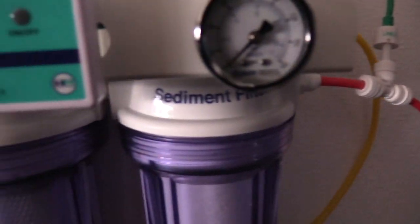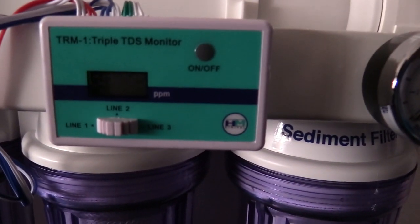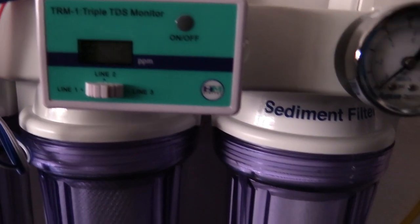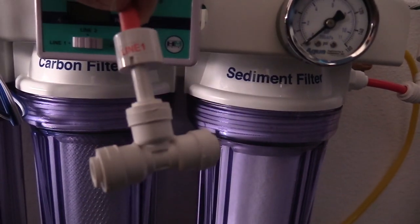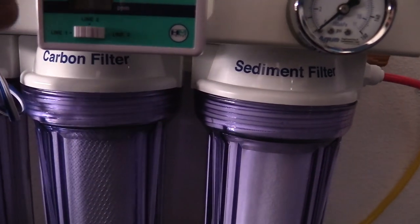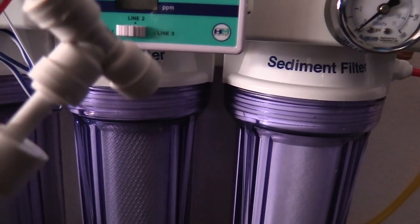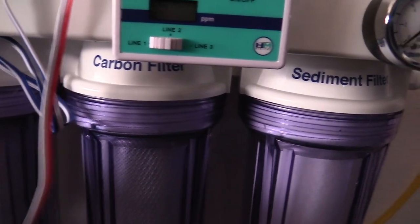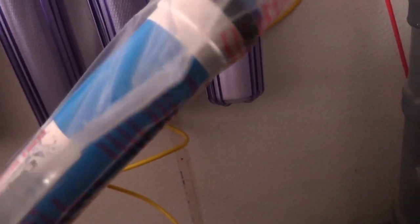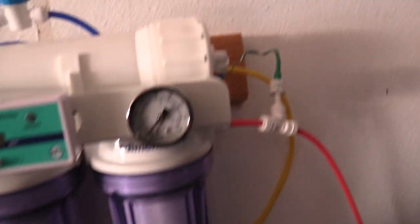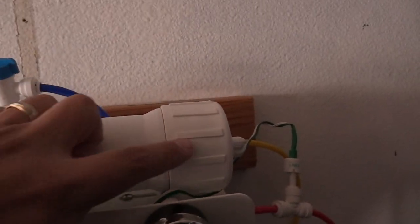The next part of the filter is actually the RO membrane. The membrane is a thin film of sheet rolled up really tight. Basically what it's going to do is collect salts, metals, bacteria, all kinds of pollutants. It's going to collect 98% of all the trash that's in your water. The membrane is really important and you need to keep in mind that you need to replace this stuff every year to two years.